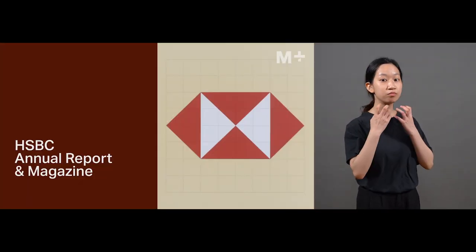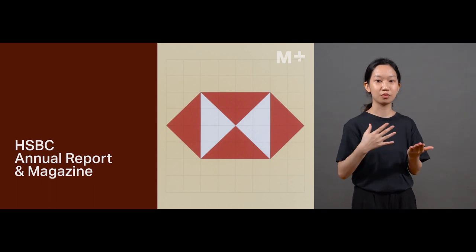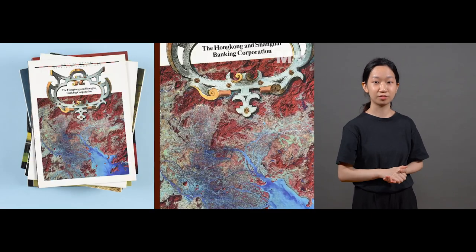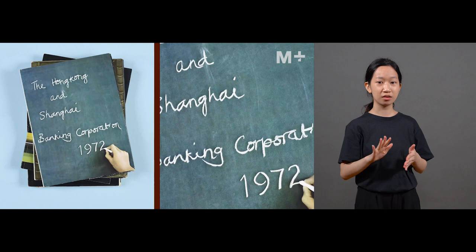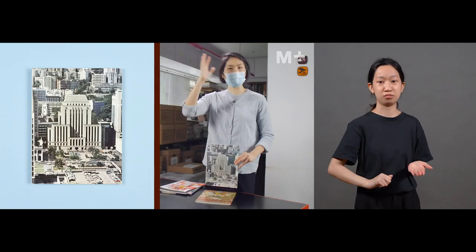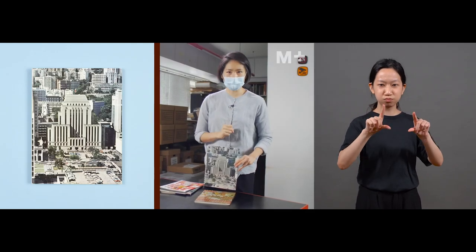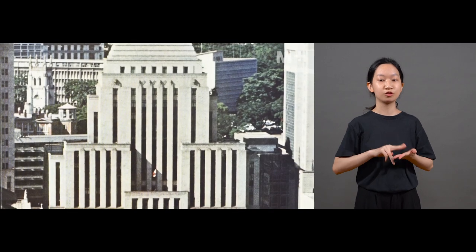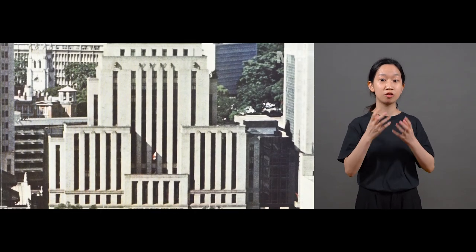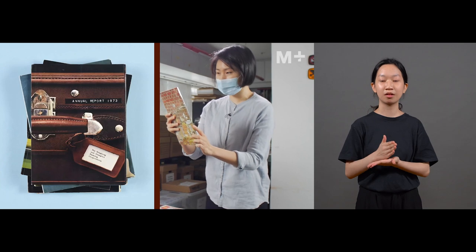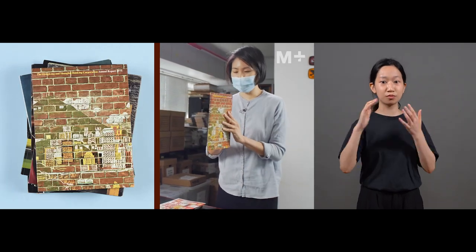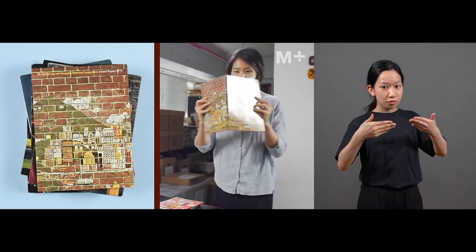We are completely fascinated with the HSBC annual report that Henry Steiner designed. So if you know annual reports, they are very dry documents, which means that they're all statistics for investors to put money into the bank and build trust. But Henry Steiner completely changed the game of annual reports. This is an example from 1975. So if you were to open this up like a folder, you will see basically like a mural on the wall.